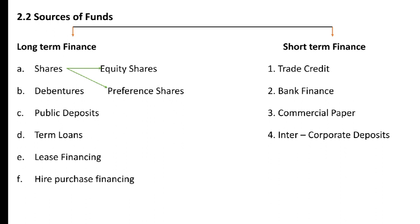Debentures are a long-term promissory note for raising loan capital. The firm promises to pay interest and principal amounts as stipulated. In India, debentures are secured against the immovable assets of the company. Public deposits are funds raised from the public through acceptance of fixed deposits. They may be either secured or unsecured.